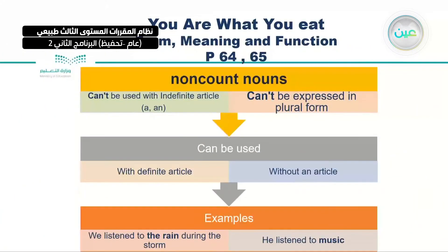Let's move to non-countable nouns. We said that we cannot use the indefinite articles 'a' and 'an', and they cannot be expressed in plural form. For example, we say 'milk' — we have milk. We cannot say 'milks'; it's incorrect. Non-countable nouns can be used with the definite article 'the', or without any article at all. For example: 'we listen to the rain during the storm', and 'he listened to music' — here without any article.